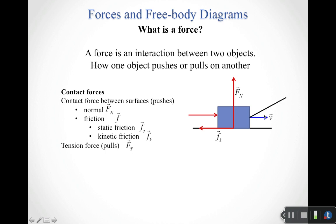The next type are tension forces. If contact forces are generally what we think of as pushes, tension forces tend to be what we think of as pulls. If I were to take a rope and attach it to the front of the box and start pulling on that rope, that generates a tension force. That tension force is directed along the rope, so tension forces are fairly easy to figure out their direction.